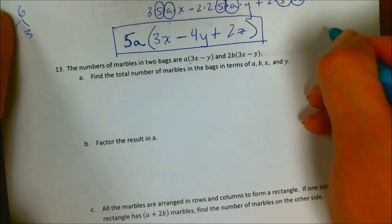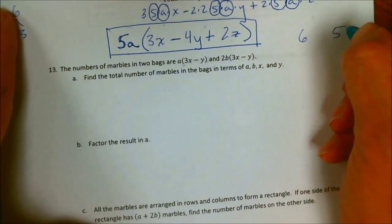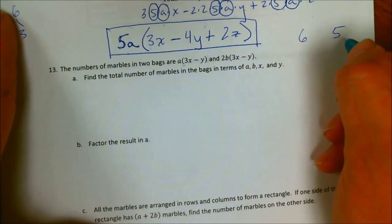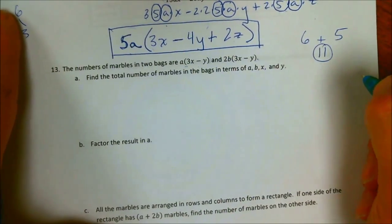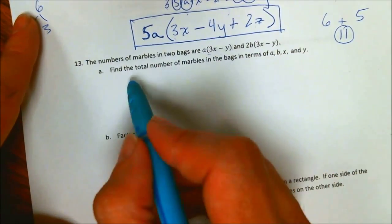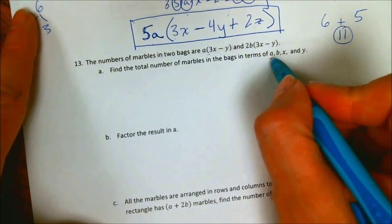So if I said, just for instance, that a bag of marbles had 6 marbles and another bag had 5 marbles, how many total marbles would there be? Well, you automatically say 11 because it's 6 plus 5. That's all we do here. It says find the total number of marbles in the bags in terms of A, B, X, and Y.